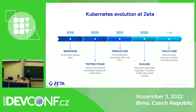We started to look into Kubernetes in 2019. We went a long way from manual cluster deployments in a single data center to an automated management solution based on Kubespray — a set of Ansible roles to manage Kubernetes — and a GitOps toolkit to manage cluster components and cluster applications.